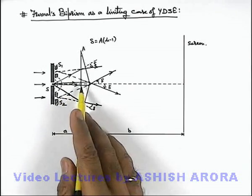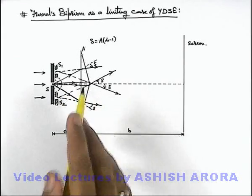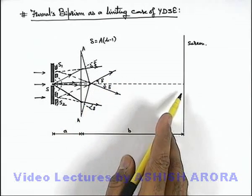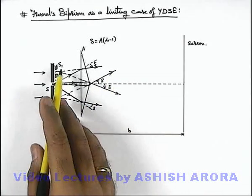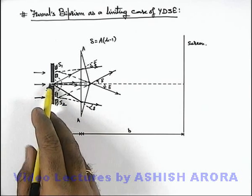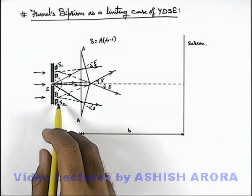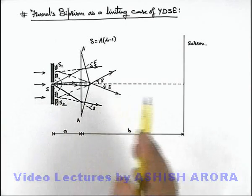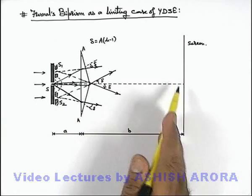In the region on the right side of the prism, it appears that the light is approaching the screen from two slits S1 and S2. As both of these slit images are the images of the single slit, these two can be considered as coherent sources for observation of interference pattern on the screen.